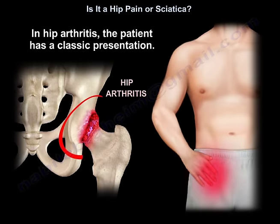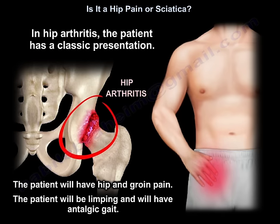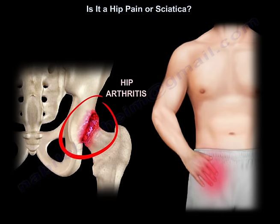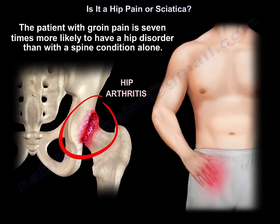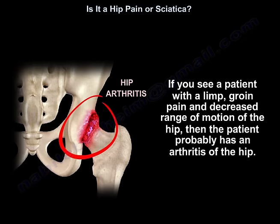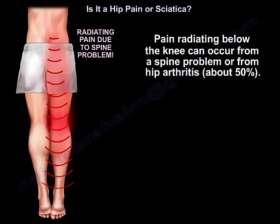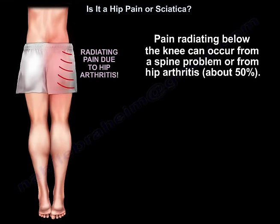In hip arthritis, the patient has a classic presentation. The patient will have hip and groin pain, will be limping, and will have an antalgic gait. The patient with groin pain is seven times more likely to have a hip disorder than a spine condition alone. If you see a patient with a limp, groin pain, and decreased range of motion of the hip, then the patient probably has arthritis of the hip. Pain radiating below the knee can occur from a spine problem or hip arthritis — about 50% in hip arthritis.